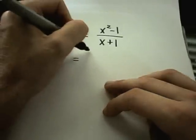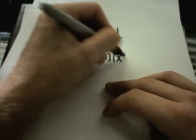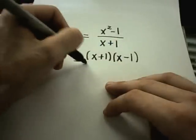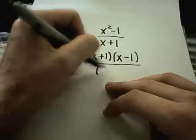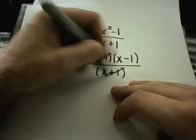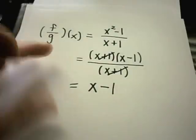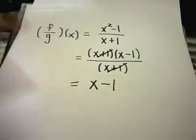Of course you could cancel this out. You could factor the top as x plus 1 times x minus 1. And then in the denominator you'll get x plus 1, which is already there. You can just cancel, and you're left simply with the function x minus 1. And that would be your solution in this case.